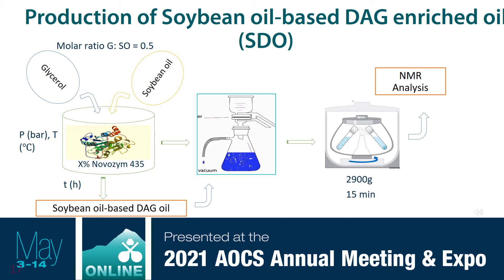This is the method I used to produce my diacylglycerol-enriched structural lipids — essentially my life for the past couple of years. I put glycerol, soybean oil, and Novozyme 435 in, pressurized under SCCO2 or without SCCO2, gave them a reaction time, and produced my soybean oil-based DAG oil. I then cleaned up this oil by removing the enzyme via vacuum filtration, removing excess glycerol by centrifuge, and the oil was then ready for NMR analysis.